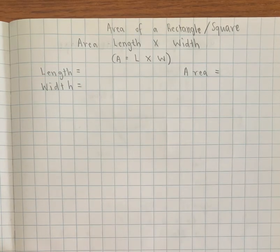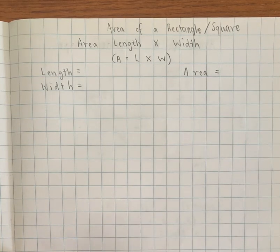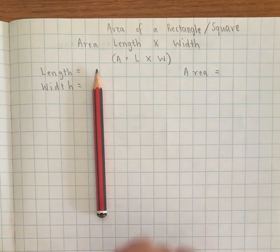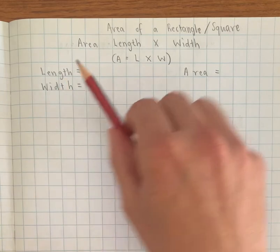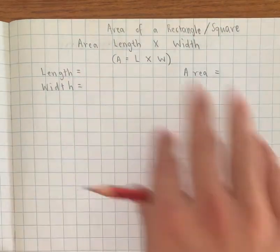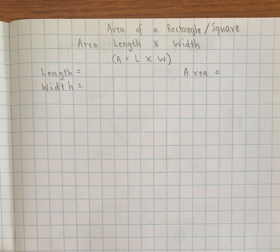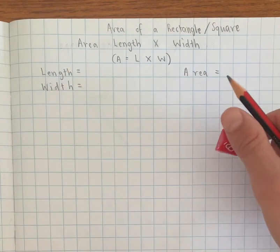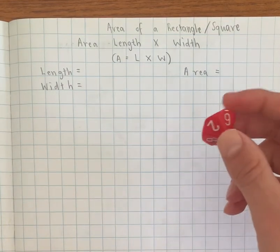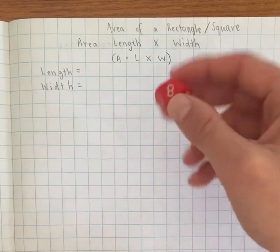So with this strategy what we're looking at doing is using the length, which goes that direction as my pencil is, multiplied by the width to determine the area, which is the space in the middle of the rectangle or square. So to get myself started I'm going to use my dice to find my dimensions.